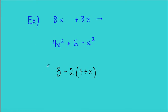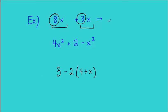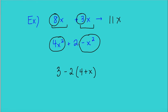Here are some examples. 8X and 3X are like terms — I can combine them. When I combine them, the variable does not change; I only add the numerical coefficients, giving me 11X. In this case, 4X squared and negative X squared are like terms, so I can subtract them, giving me 3X squared plus 2.